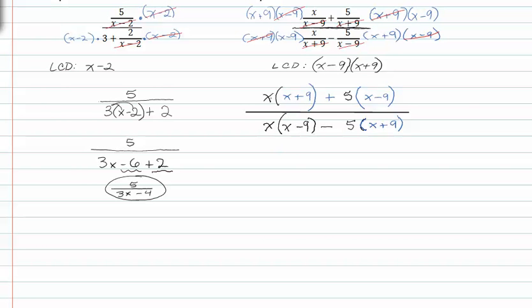From here, we can distribute to get x squared plus nine x plus five x minus forty-five.